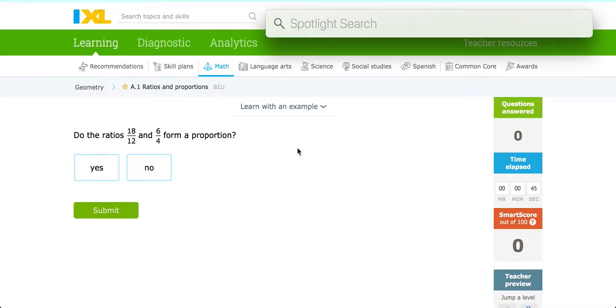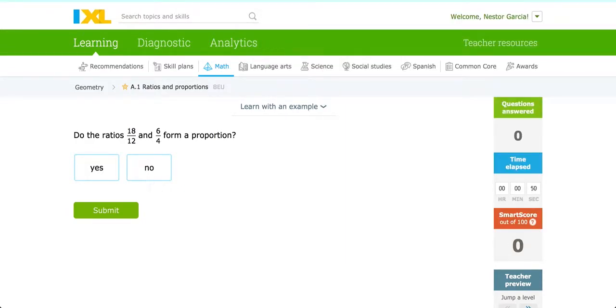So in this case, for example, you take 18 and multiply by 4, we get 72. And if you then take 12 and multiply by 6, you also get 72.